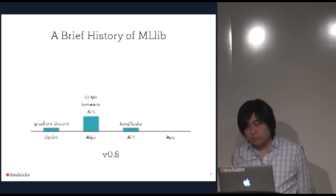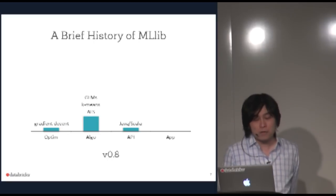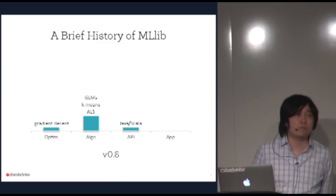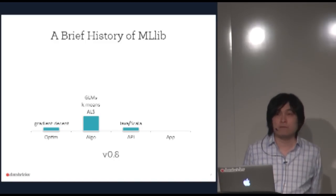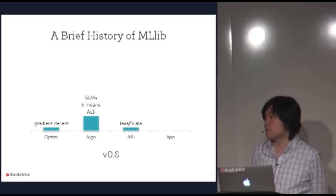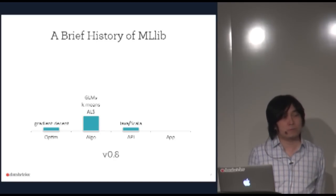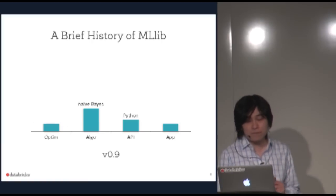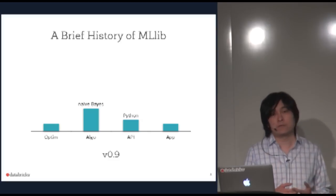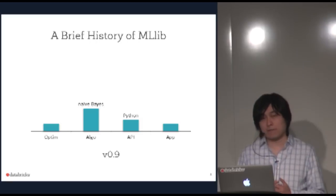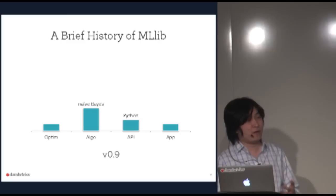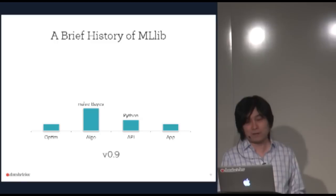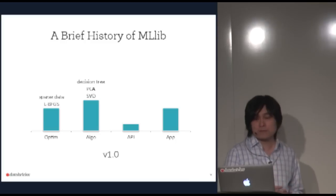Let me give a brief history of MLlib. Initially at version 0.8, about a year and a half ago, we started with linear algorithms, k-means, and alternating least squares, supporting Scala and Java, with gradient descent for optimization. In 0.9 we added Naive Bayes and a Python API — there are a lot more Python users than Scala users, so Python support was important.